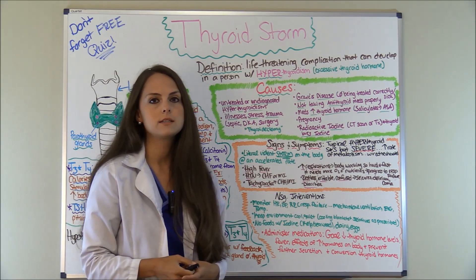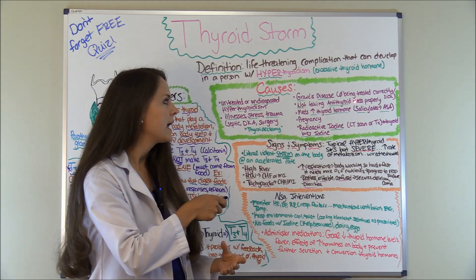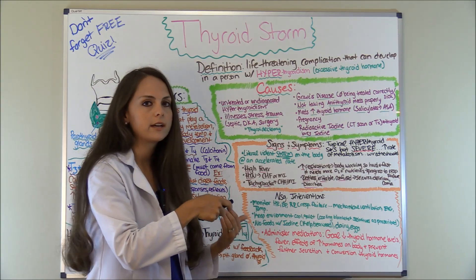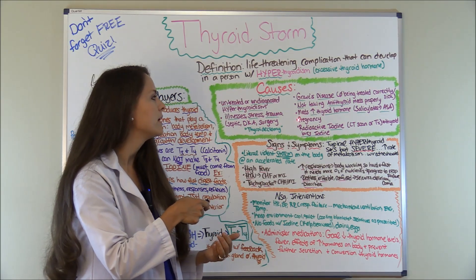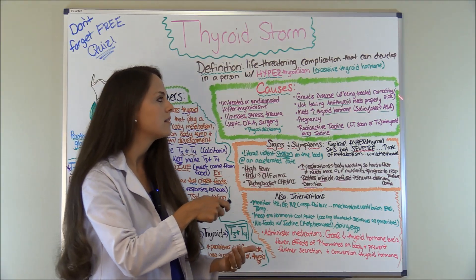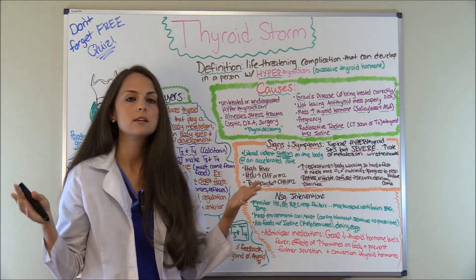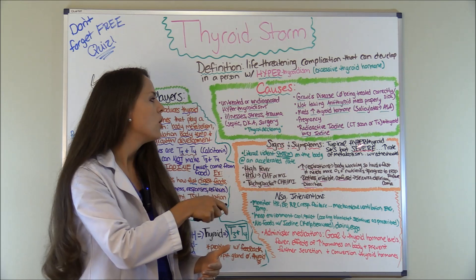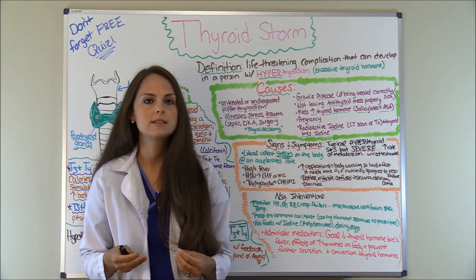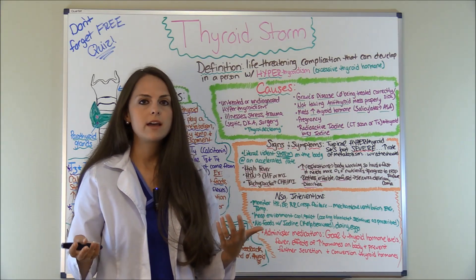Also, people with Graves' disease are more susceptible to this, and it's usually because it's not being treated correctly or they've gotten sick. Not taking their antithyroid hormones properly — they're not compliant. Or they're taking medications that actually increase thyroid hormones, like aspirin and salicylates. Pregnancy can also throw you into this. Or radioactive iodine — remember, your thyroid gland loves iodine — so if they got a CT scan with contrast or were getting treatment, this can throw them into a thyroid storm.